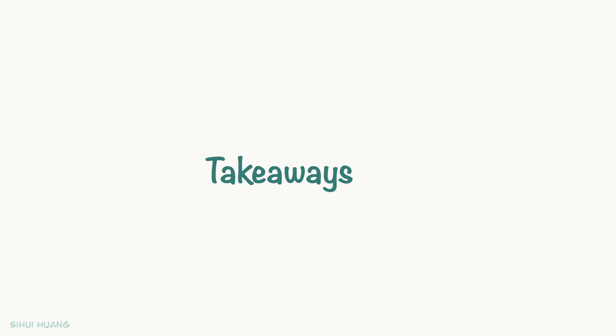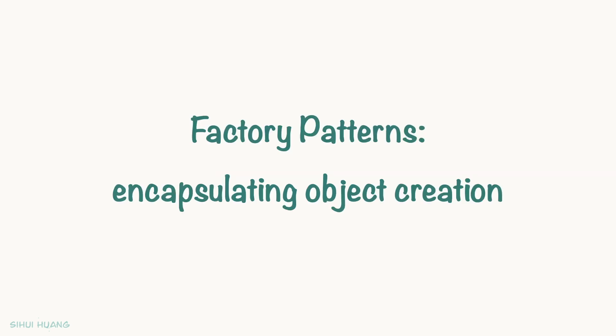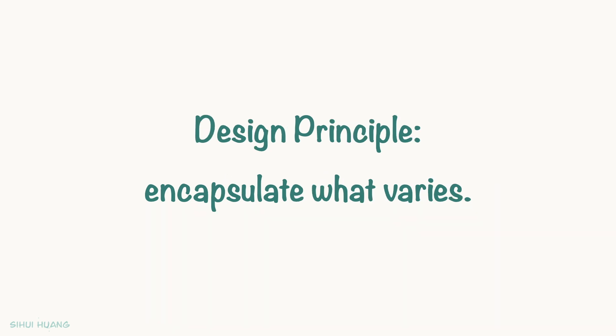Let's recap some key takeaways. First of all, we learned that factory patterns are about encapsulating object creation. We also learned an important design principle: Encapsulate what varies. We want to separate the parts that vary often from the stable parts. Because each time we modify a part of our code, we may introduce bugs. The parts that vary are the fragile parts of our system. We want to keep the stable parts away from the fragile parts. So if we do introduce bugs when updating a part of the system, it will be easier for us to locate the bug.